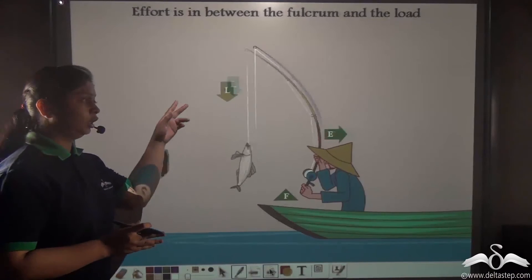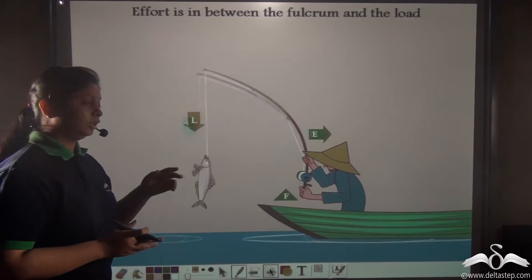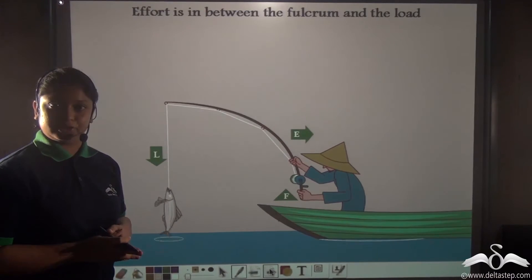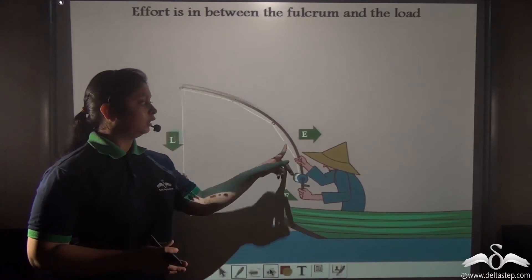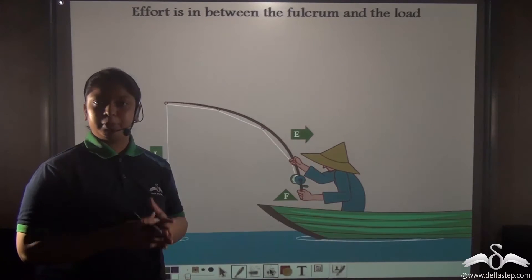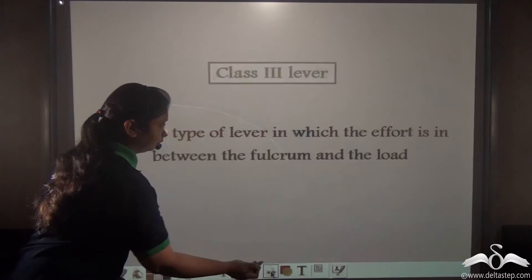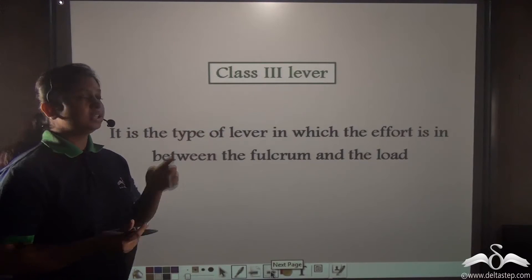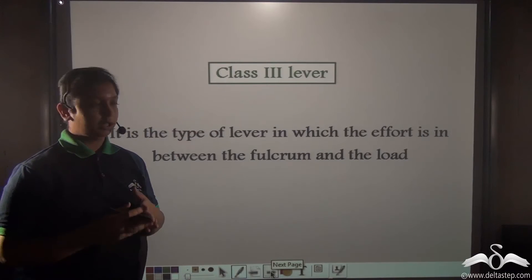The load would be the rope with which the fisherman catches his fish. Notice the effort is in between the load and the fulcrum. Therefore, this will be a class 3 lever.